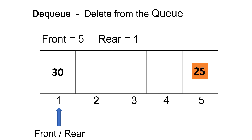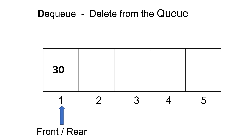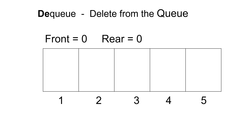What will happen if we delete this element from the queue? After deleting the last element from the queue, front and rear both will point back to 0, which means that the queue is empty again.